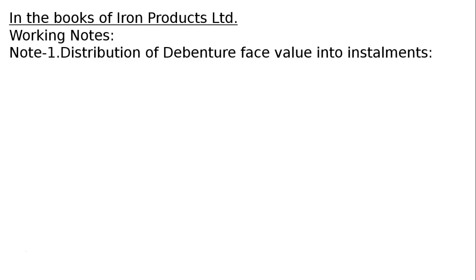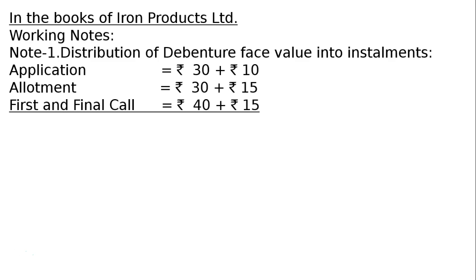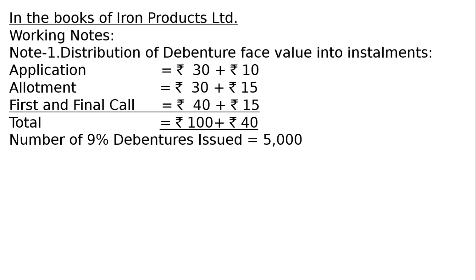Working Note 1: Distribution of the debenture face value into installments. Application: Rs.30 plus Premium Rs.10. Allotment: Rs.40 plus Premium Rs.30. Wait — Allotment Rs.40, Premium Rs.15. First and Final Call: Rs.40 plus Premium Rs.15. Total: Rs.100 face value plus Rs.40 premium, equaling Rs.140.